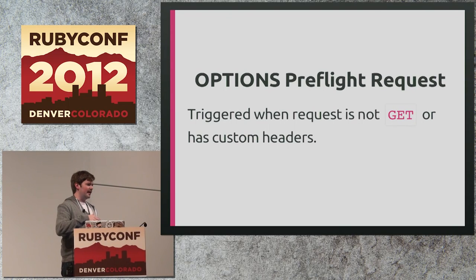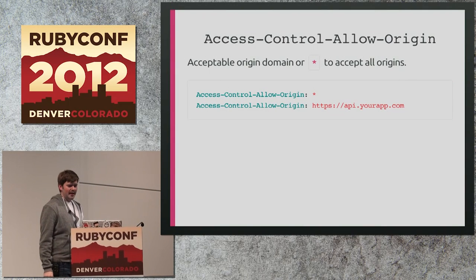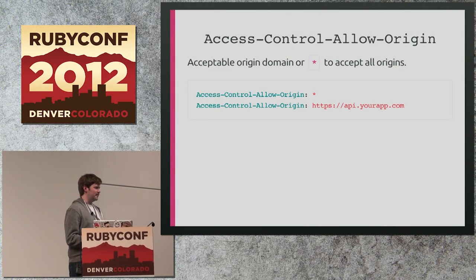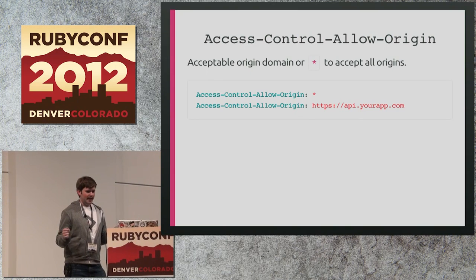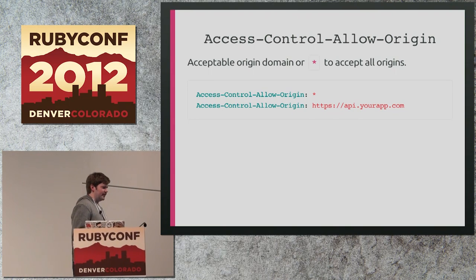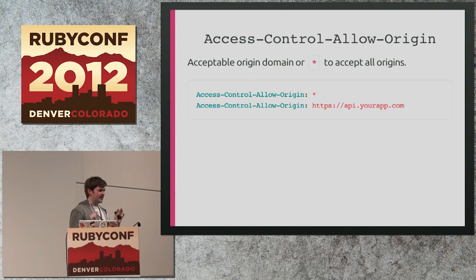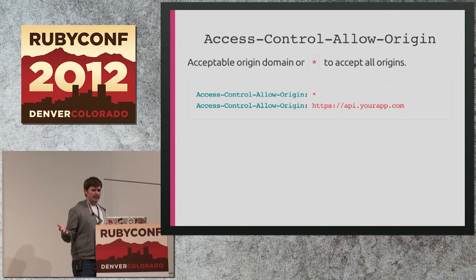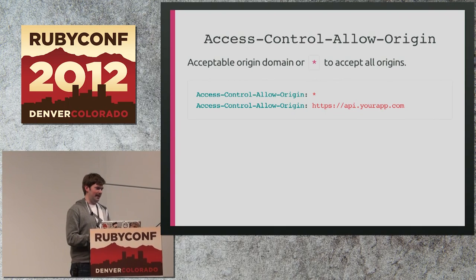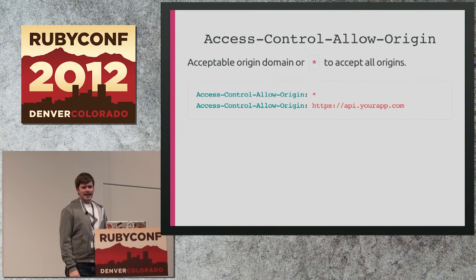In the response headers there will be Access-Control-Allow-Origin, which can be a star — meaning any domain can make a request at any time — or a specific origin. If it's a specific origin, that can be something statically added to your server, meaning you're only ever allowing requests from one domain, or you could dynamically compute it and send back a domain if it matches some whitelist or other specification.